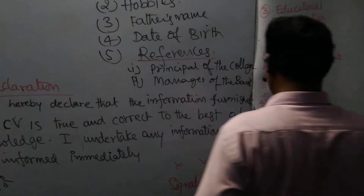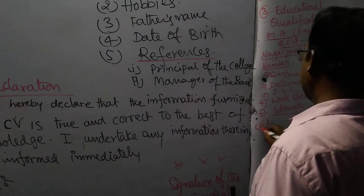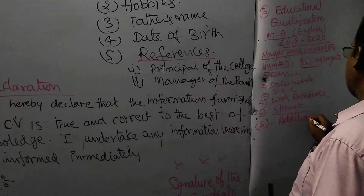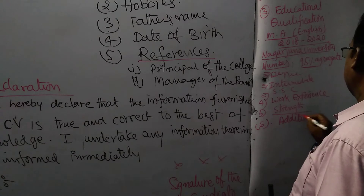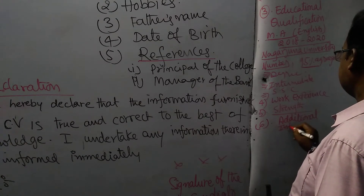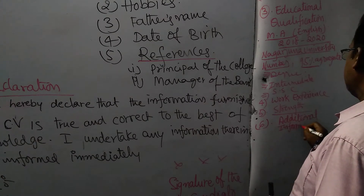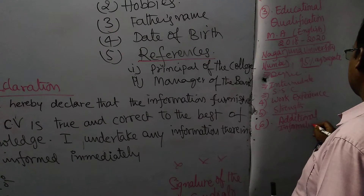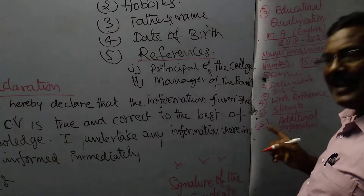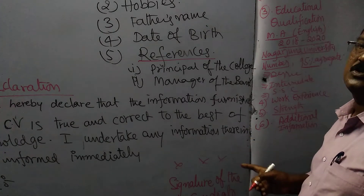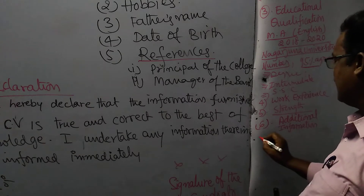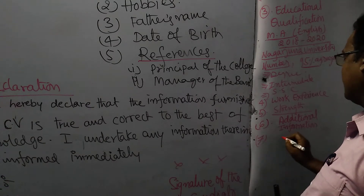The sixth one is additional information. Additional information — already told you: hobbies, languages known, father's name, date of birth — like that you can mention.